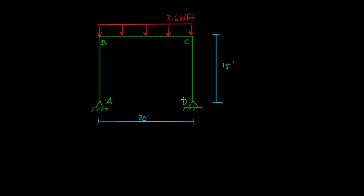Welcome to another example for the slope deflection method. Here we have a pretty interesting problem. It's a three-piece frame, and instead of having fixed ends at points A and D, we actually have pins. The frame is 15 feet high and 20 feet wide, and at the very top we have a distributed load of 3.6 kips per foot.